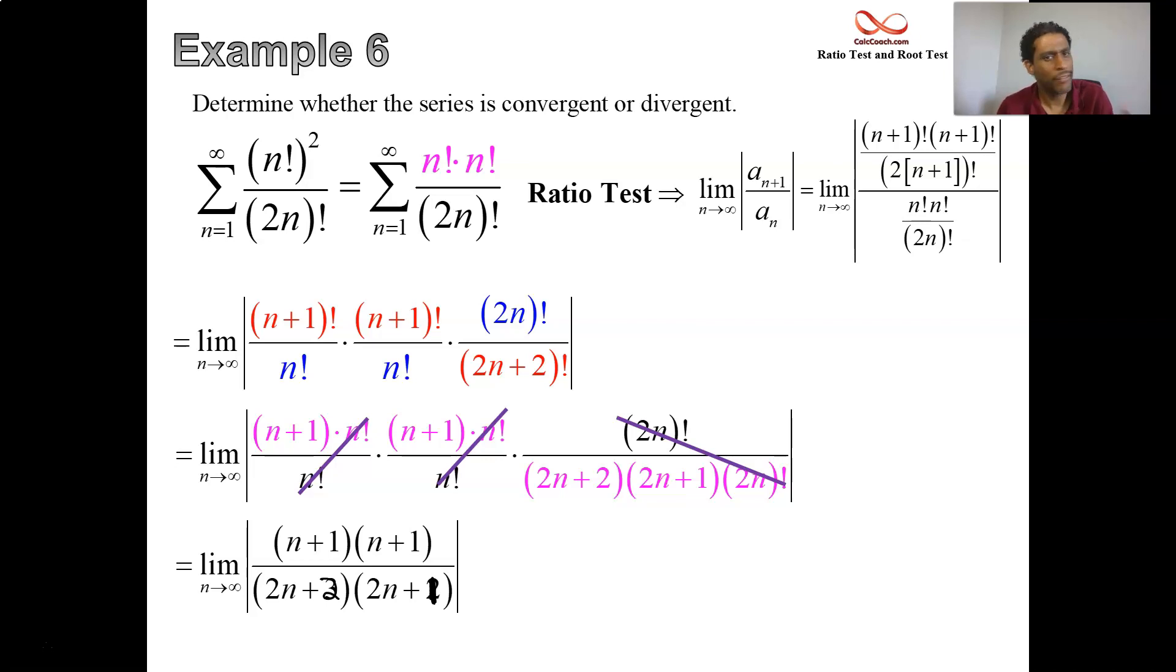We don't have to multiply those out. Let me just take that as a fact. So 1 fourth is your answer, which is less than 1. And you then respond that the original series is convergent by the ratio test.